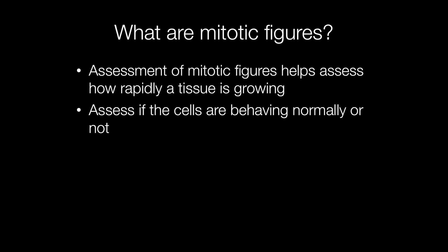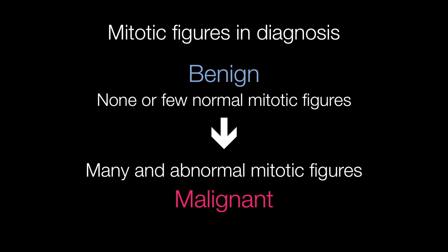Assessment of mitotic figures is a really useful tool for assessing how rapidly a tissue is growing and whether the cells are behaving normally or not. Mitotic figures represent a spectrum of cell behaviour. Benign or normal tissues will have no or very few normal mitotic figures with no abnormal ones, but at the other end of the spectrum, highly malignant tumours will tend to have many mitotic figures, and many of those will be abnormal.